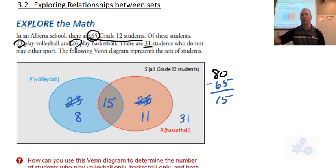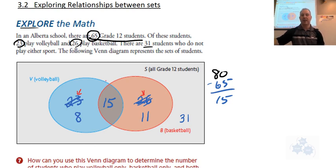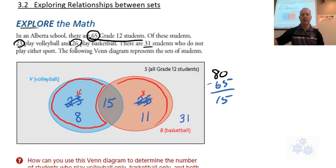Any that we've double counted — the ones that play both — go in the overlapping region. We have to take them away from our original numbers. So this 8 tells us the number of players who play volleyball but not basketball. Over here, 11 signifies they play basketball but not volleyball. And then there are 15 that play both.